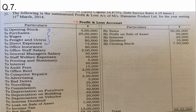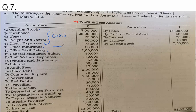Yes, it comes under COGS — absolutely correct. Now, all these next items are related with one particular overhead. What is that called? They are all office and administrative expenses. If you see, all these expenses are office-related. Office insurance, general manager salary — I repeat, these are office-related.